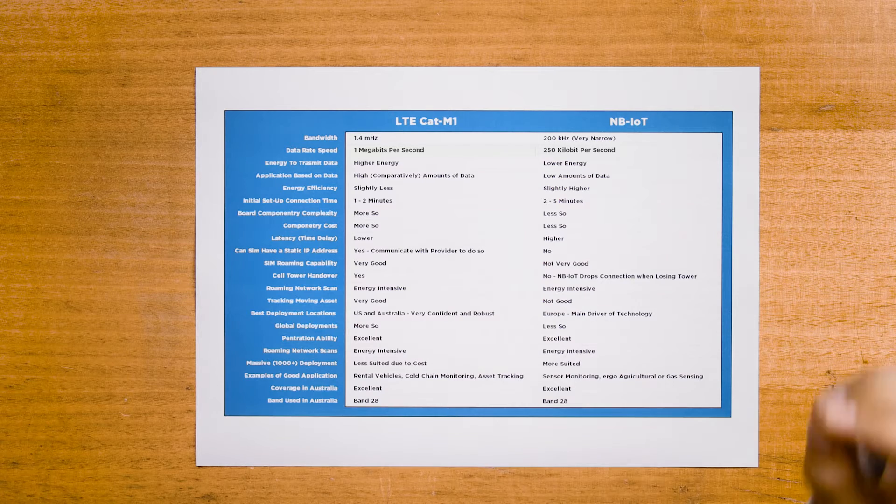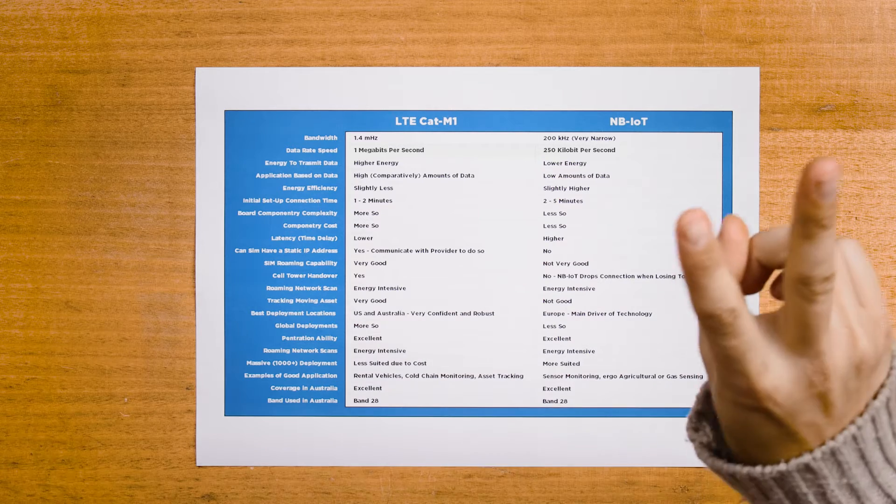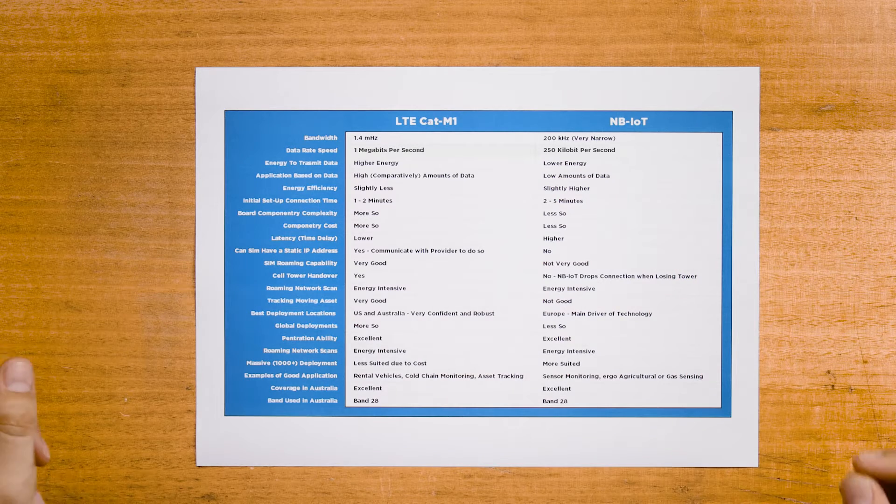It is also worth noting that a lot of modern IoT devices can connect to both networks, and it is up to you to decide which one to go with. I have brought a table to the table. This table dives into the major differences between these two networks, starting with bandwidth.